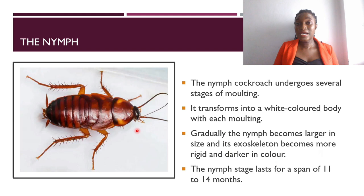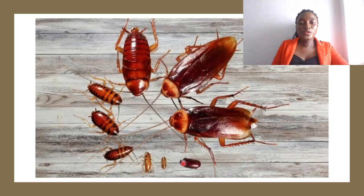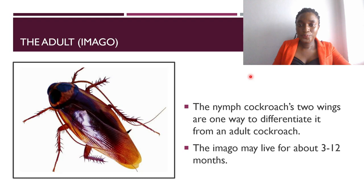The adult usually has a darker color than the younger one and is also much larger than the nymph. The nymph stage lasts for a span of 11 to 14 months. Here we have a picture showing a clear depiction of the various stages in the metamorphosis of the cockroach — the egg case maturing into the nymph, the nymph molting through several stages to reach the adult stage, which has wings, along with the changes in color as it ages.